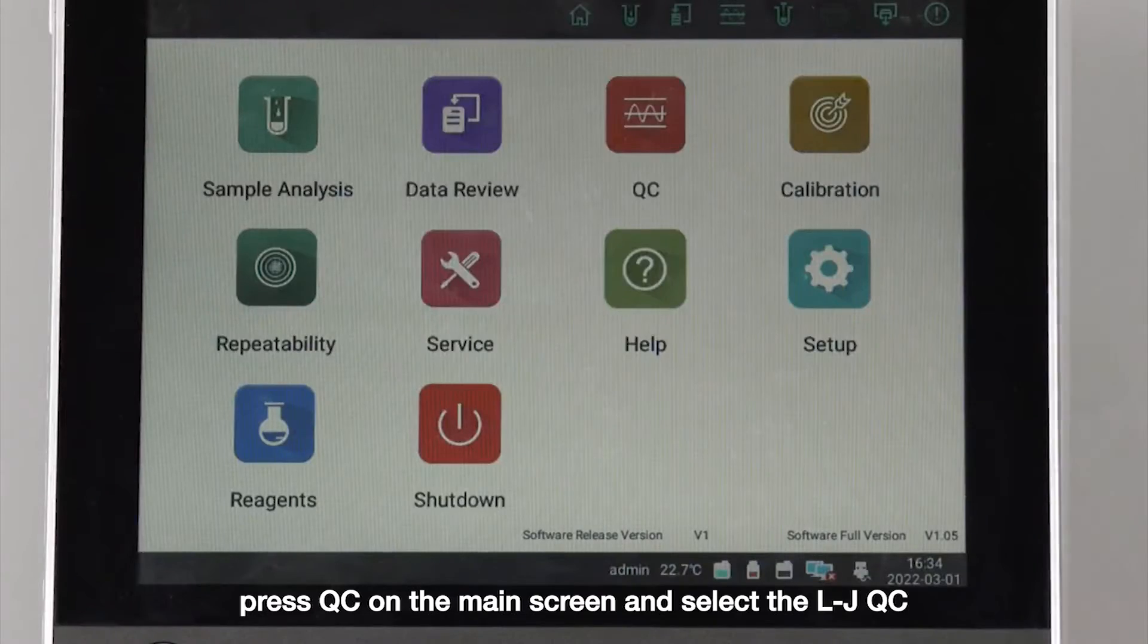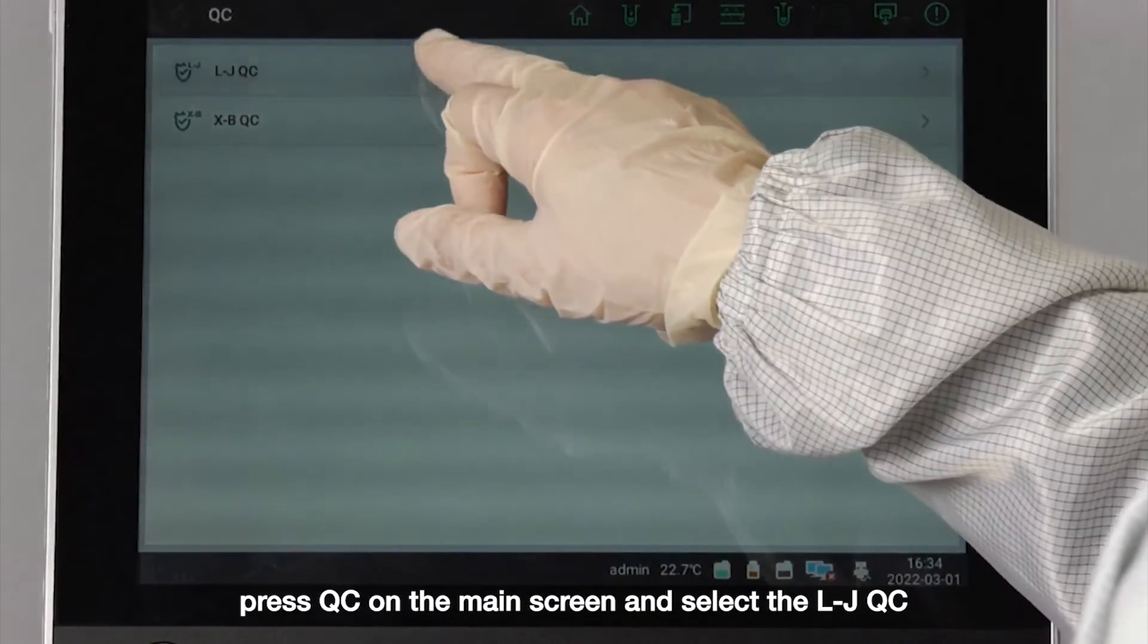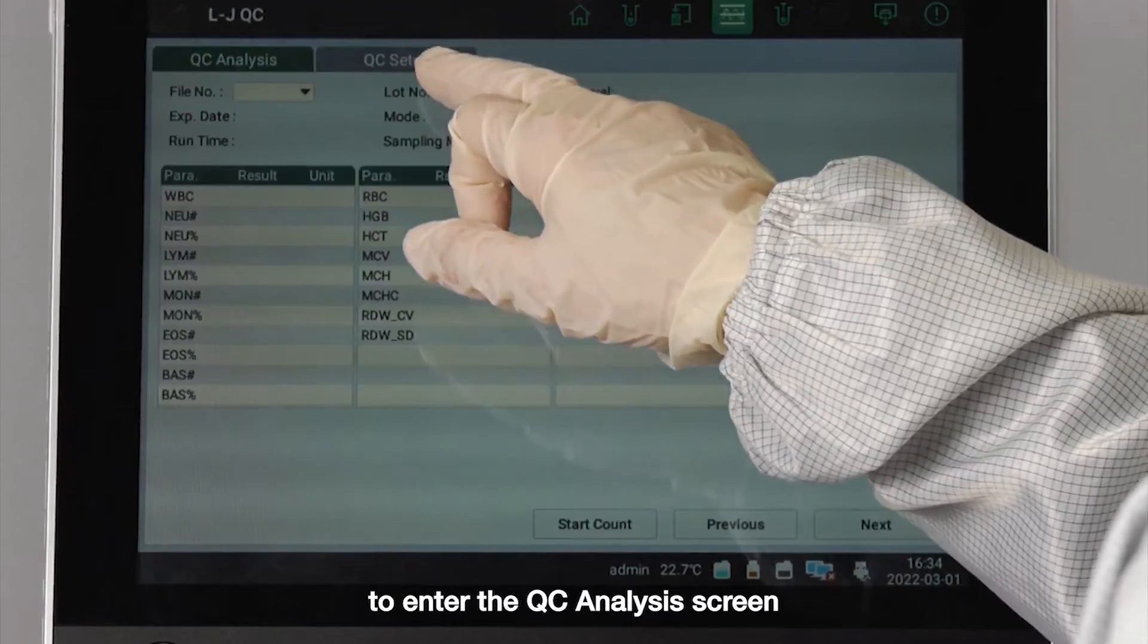Press quality control on the main screen and select the LJ quality control to enter the quality control analysis screen.